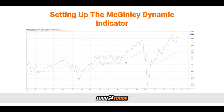The setup of the McGinley Dynamic Indicator is quite simple and straightforward on pretty much every trading platform that currently offers it. After selecting the indicator, the only adjustment you really make is for the value of N, which defines the number of periods. For example, if you wanted to replicate a 20-day moving average, you would simply set the McGinley Dynamic length to 10 — that's due to the smoothing factor the McGinley has. On most platforms, the default value for N is set to 14 periods, just like most moving averages.